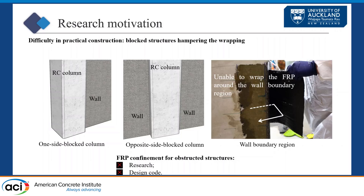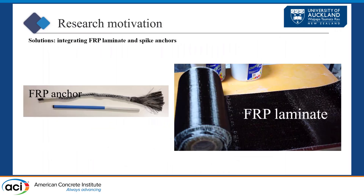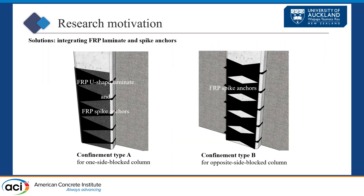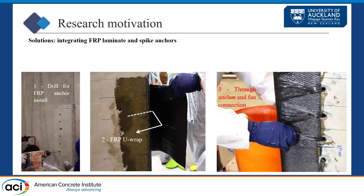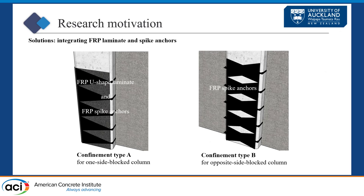We tested a few walls as well, but that paper was just finished a couple of days ago. I'm presenting the work we did to reach the point where we could test walls. We are using FRP sheets, wet layup with FRP anchors — bundle of anchors. Two types of confinement: Type A, where only one side of the column is blocked, and Type B with both sides blocked. For walls, we can use either Type A or Type B depending on the type of structure.